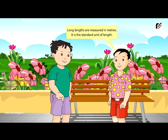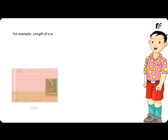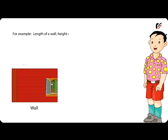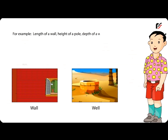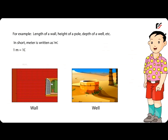Long lengths are measured in meters. It is the standard unit of length. For example, the length of a wall, height of a pole, depth of a well, etc. In short, meter is written as m. 1 meter is equal to 100 cm.